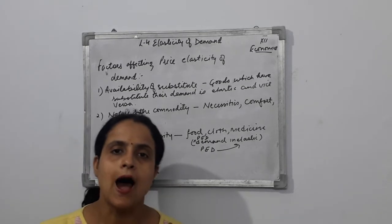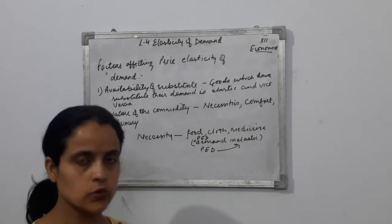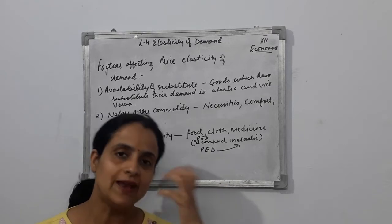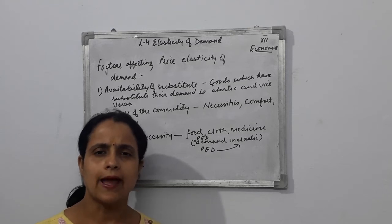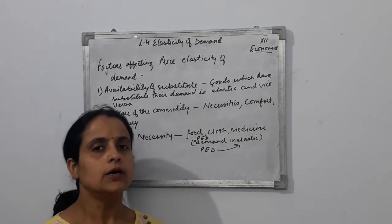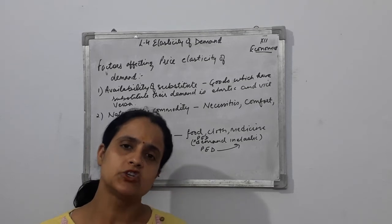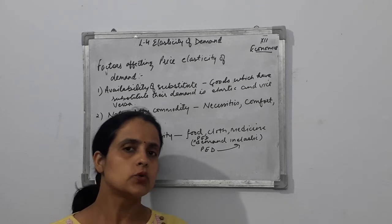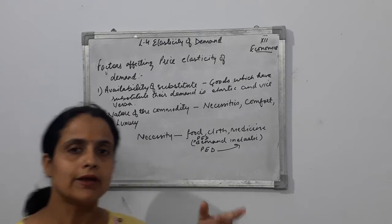The second type is comfort goods — goods that give a feeling of comfort, like coolers, scooters, and washing machines. Although these are not absolutely essential, they have become a very important part of life. If the price of such goods increases, demand generally does not decrease. So comfort goods also have inelastic demand.